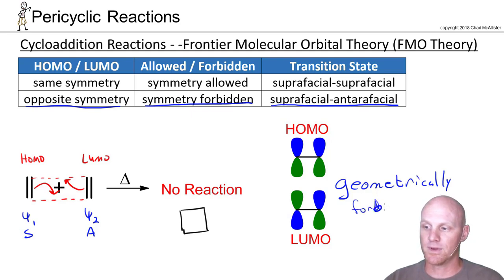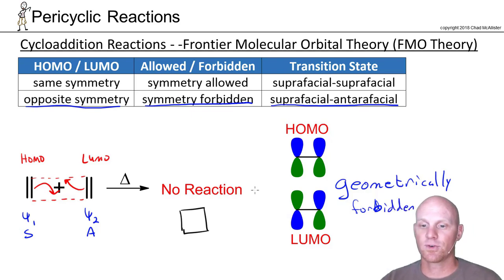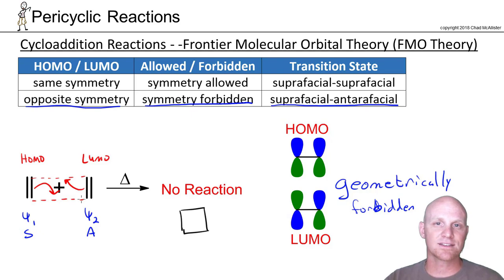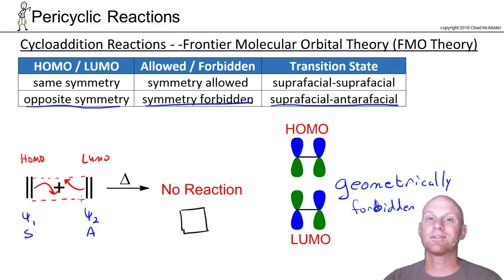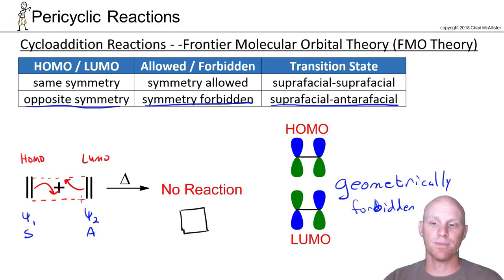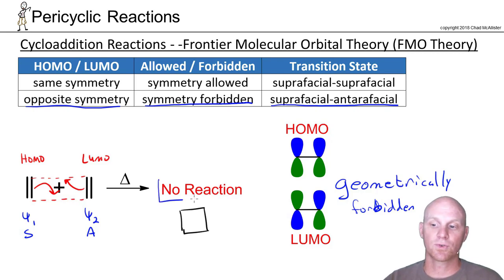There's just not enough room to kink these molecules enough to get that suprafacial-antarafacial interaction. So for two ethylenes it's not just symmetry-forbidden, it's also geometrically-forbidden, and that's why we truly have no reaction here. As long as one of your reactants is more than two carbons, you can get it to happen at least geometrically, even if it's symmetry-forbidden. But for the 2+2 with two ethylenes, both restrictions apply.